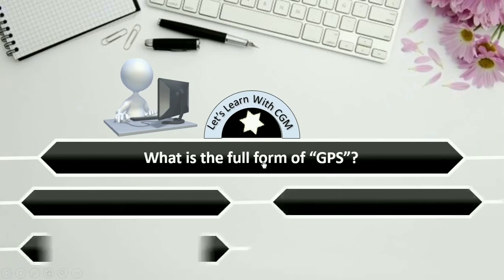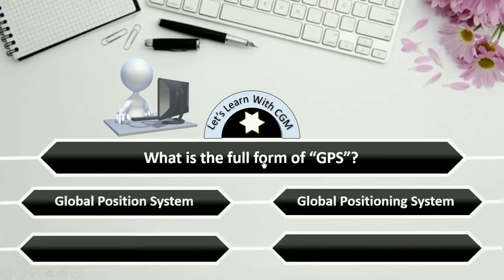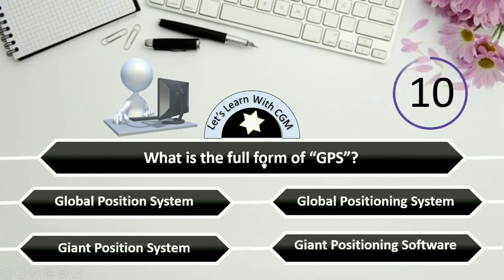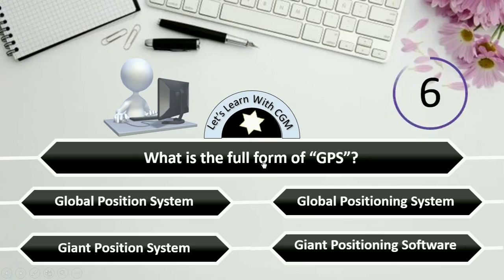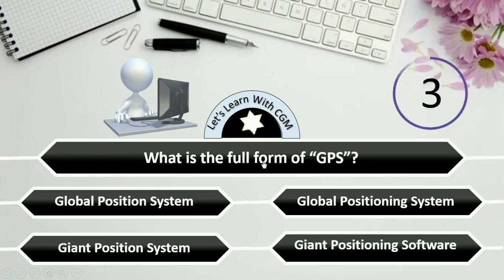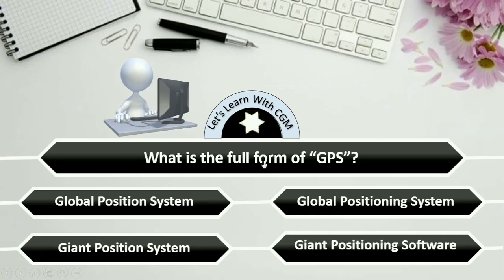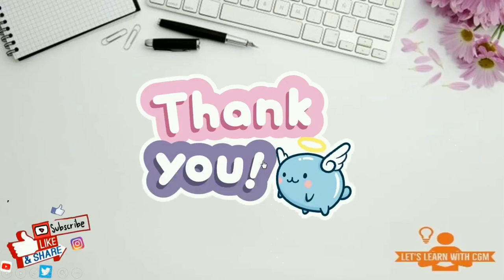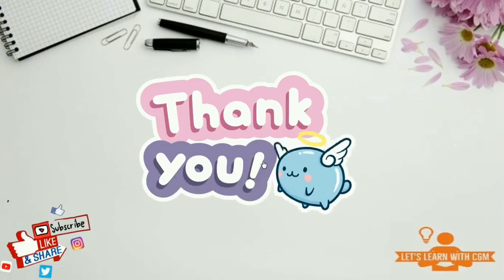What is the full form of GPS? Options are Global Position System, Global Positioning System, Giant Position System, or Giant Positioning Software. The answer is Global Positioning System.